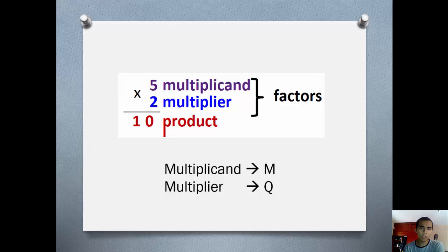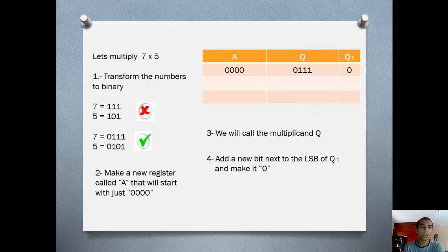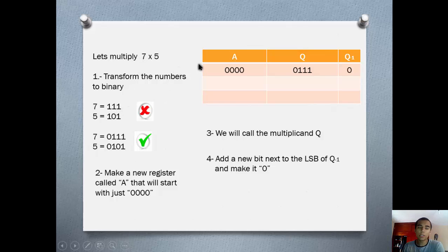You need to keep in mind that there is a multiplicand and a multiplier. We will call these M and Q. It doesn't matter which one it is, but we need to separate them — M and Q. So let's assume you want to multiply 7 times 5. The first thing you want to do is transform these numbers into binary. 7 will be 111 and 5 is going to be 101. But that's incorrect because, as we said, these are signed numbers. So we need to prepend a 0 to let everyone know that these are positive. 0 for positive and 1 for negative.